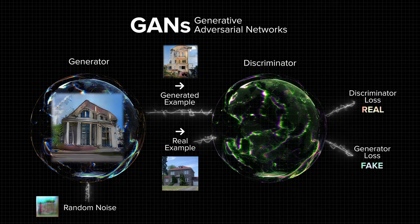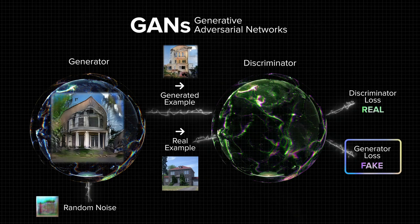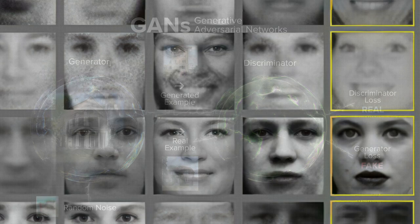As the generator learns from its mistakes, it starts producing convincingly good results. And as soon as both the discriminator and human are fooled into believing the generated image is real, the learning process is considered a success.